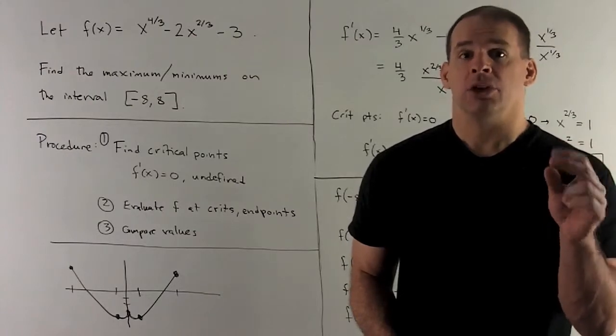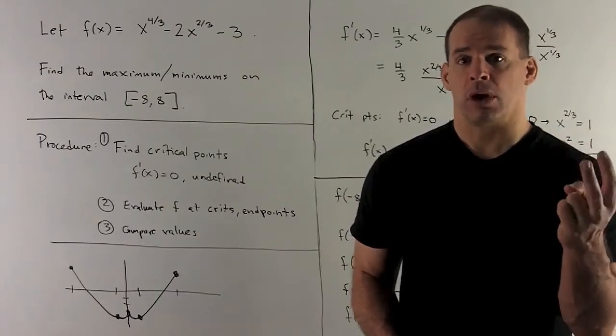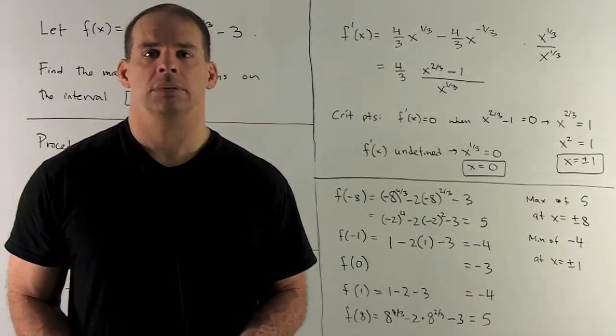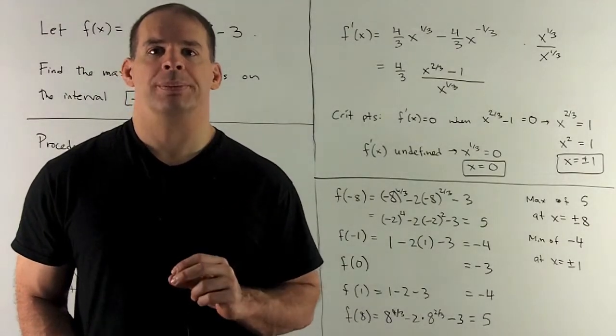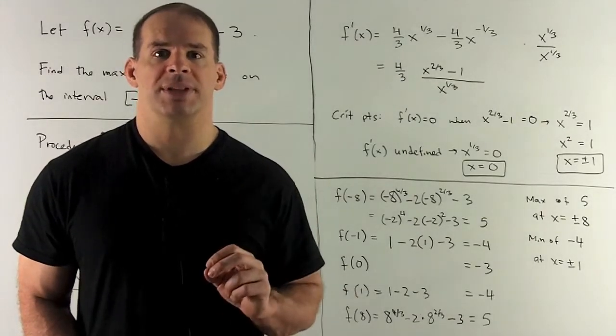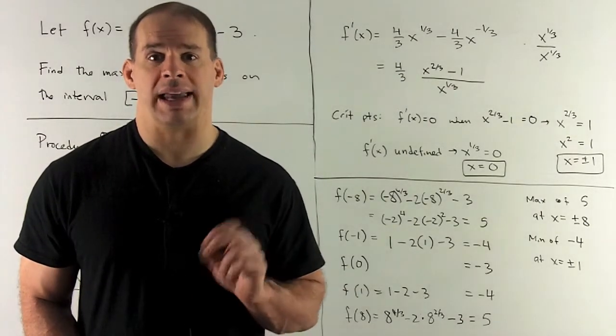So we're expecting two critical points where f' = 0, one critical point where f' is not defined. Let's take the derivative of f(x). For x^(4/3), 4/3 comes down, we subtract 1, I get x^(1/3).